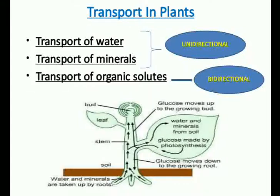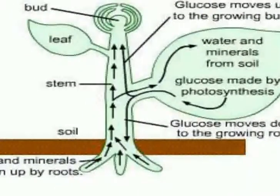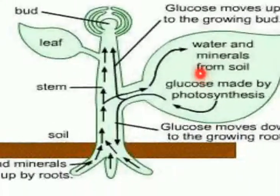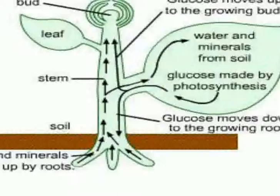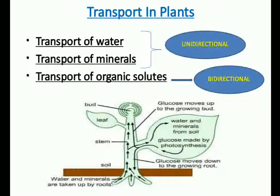Water moves from the roots and is taken to all parts of the plant, moving in a unidirectional manner. The food manufactured in the leaves — the glucose made by photosynthesis — has to be transported in both directions: upward towards the growing tips as well as downward towards the root tips. So the movement of organic solutes is generally bidirectional, whereas the movement of water and minerals is unidirectional.